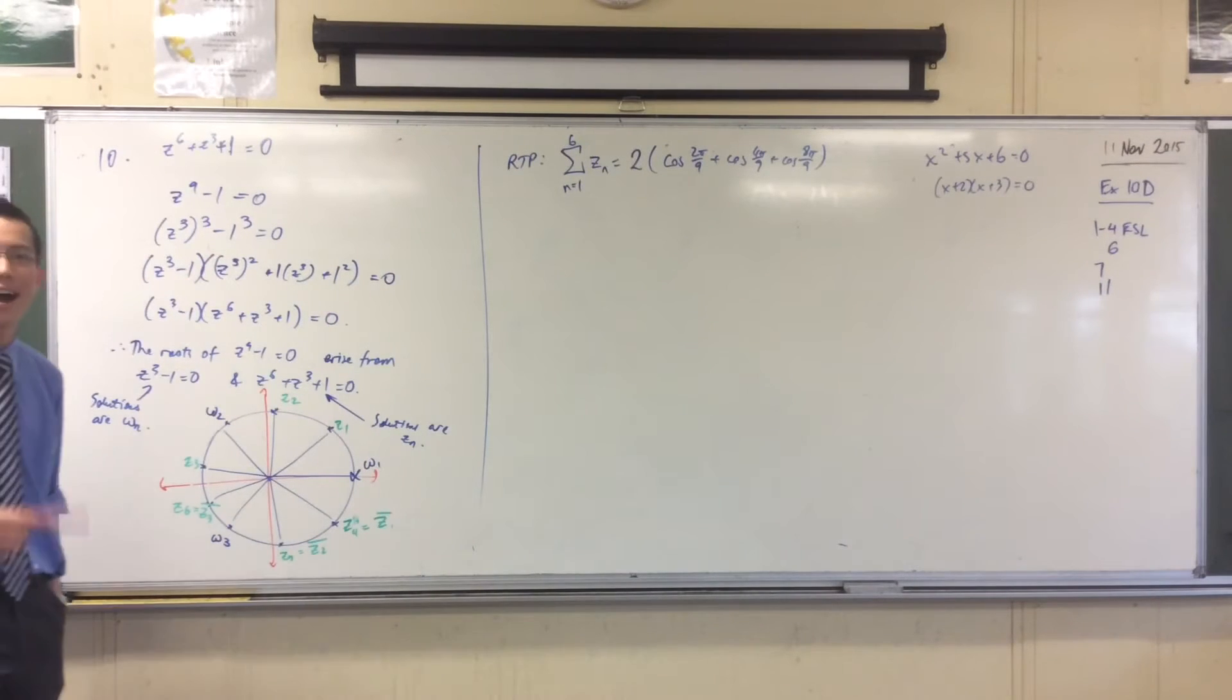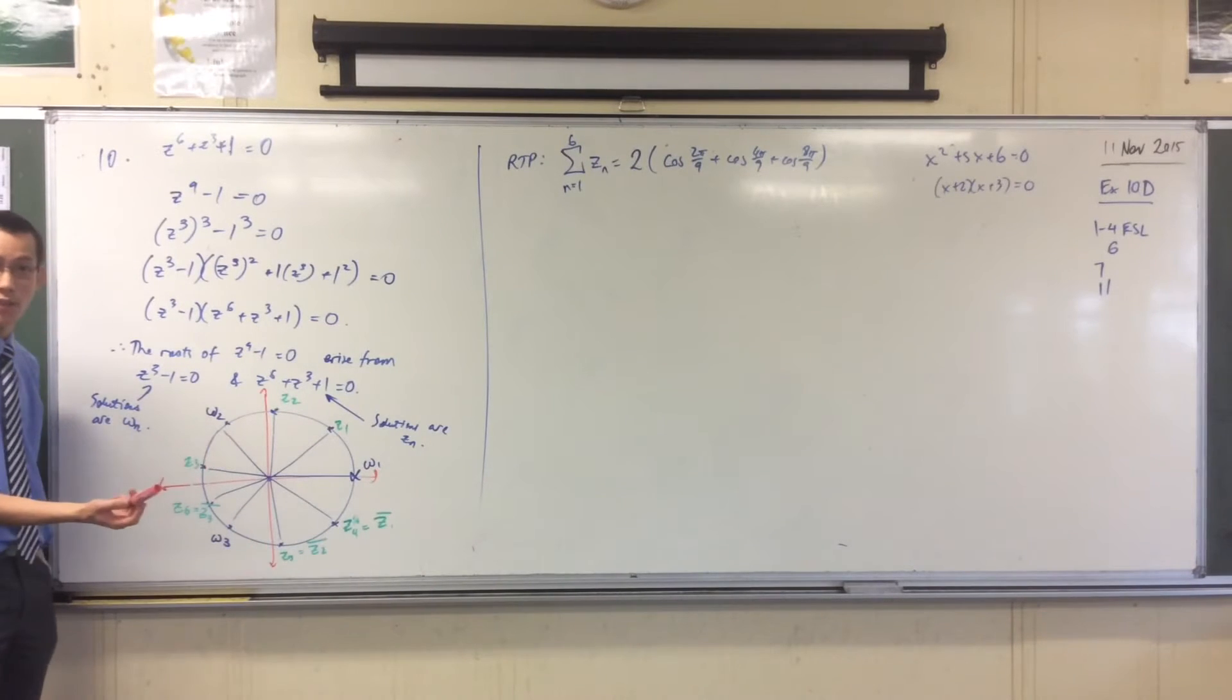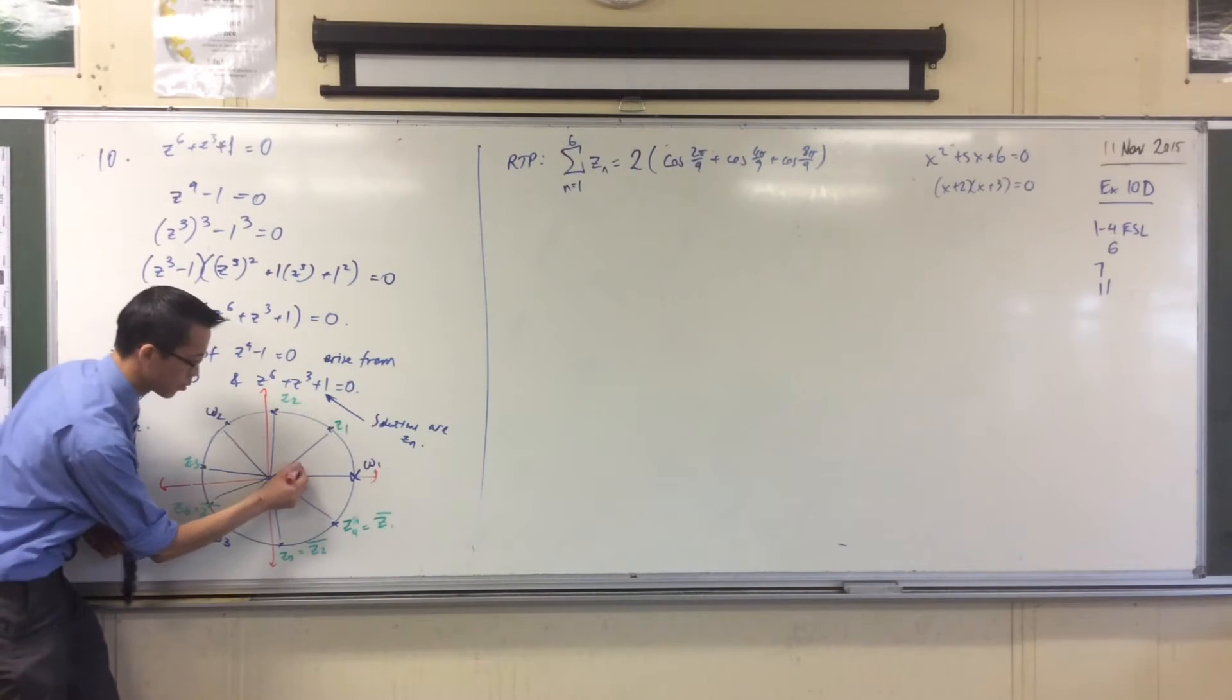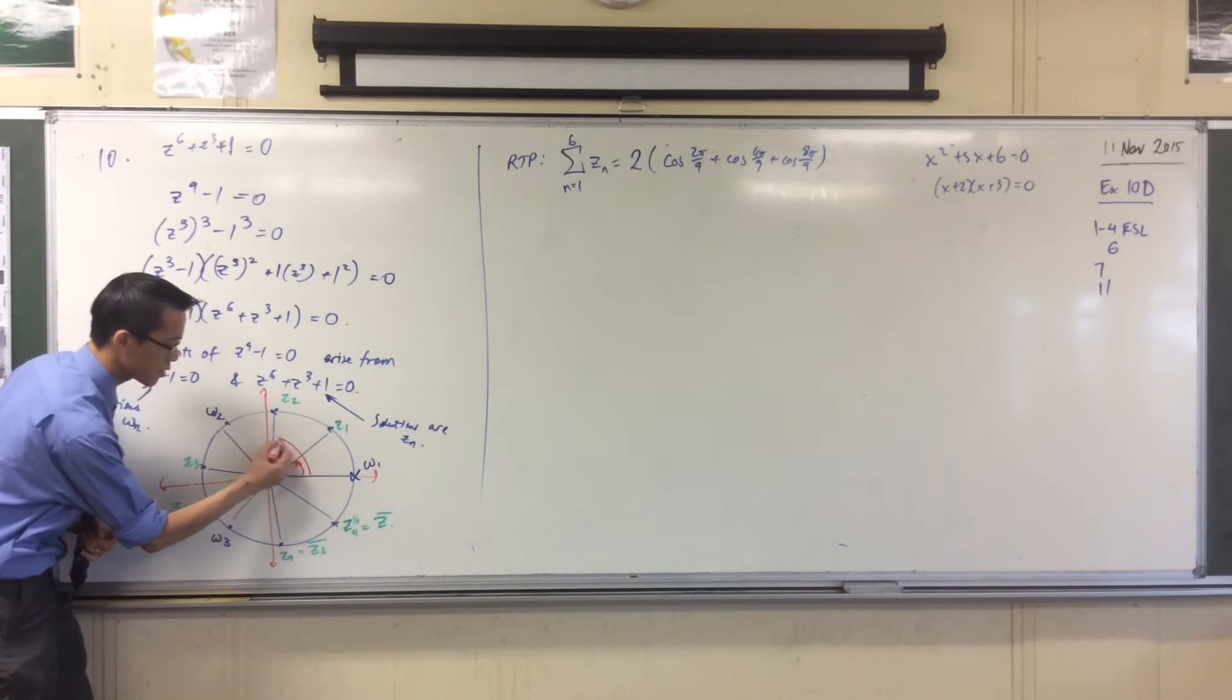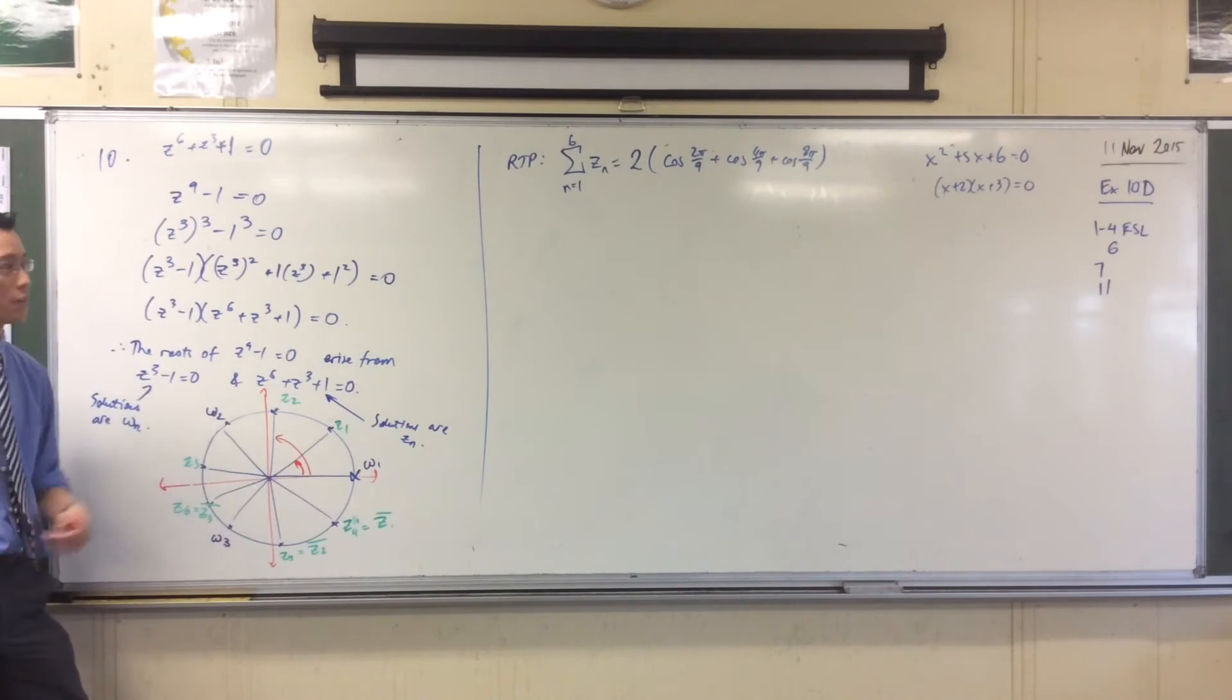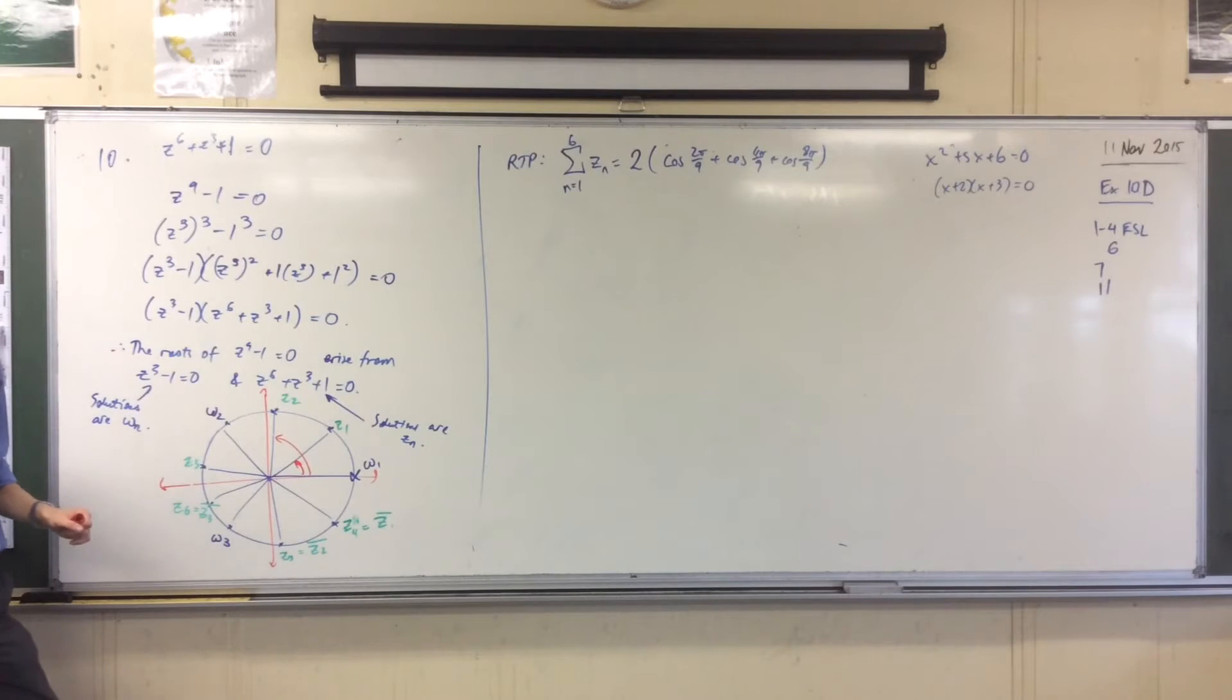Those angles are the arguments of the three roots that I've identified. This one, z1, that'll be 2π on 9, the first one. This one, 4π on 9, it's the second one. 2π on 9, 4π on 9, I skip one, 6π on 9. Why do I skip 6π on 9? Because it's not a solution.